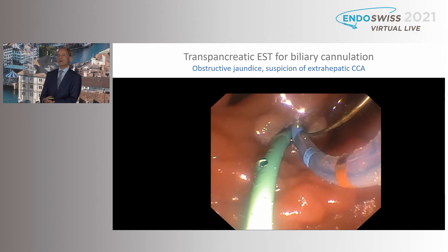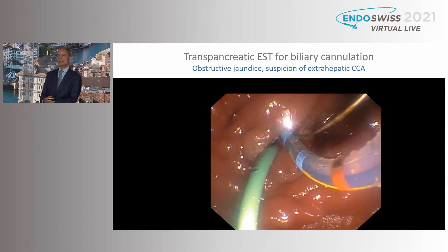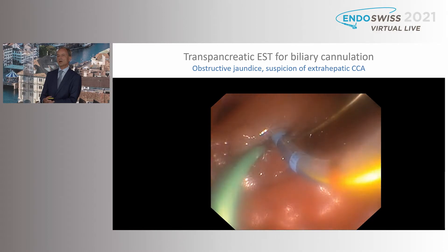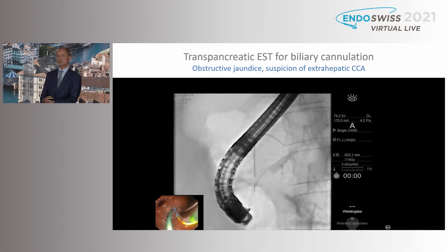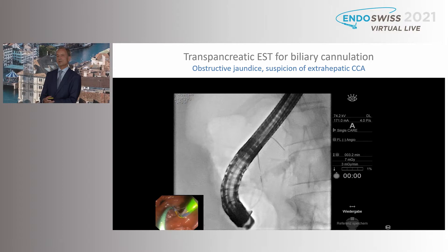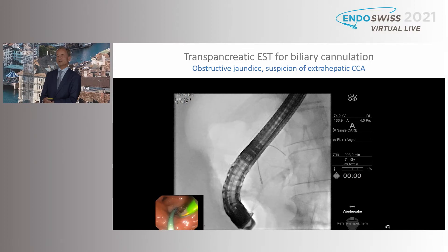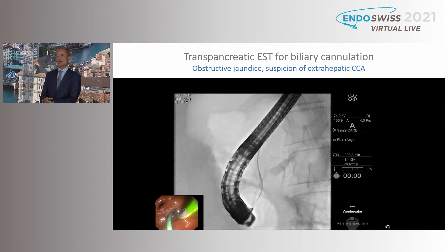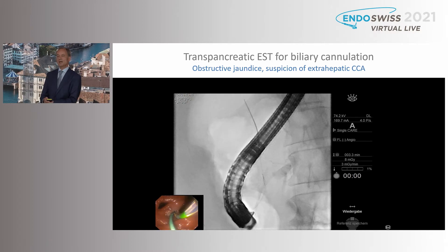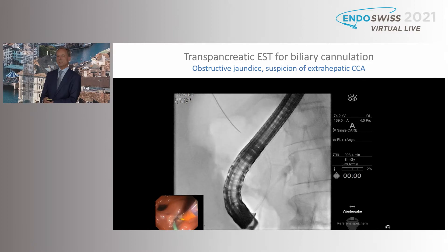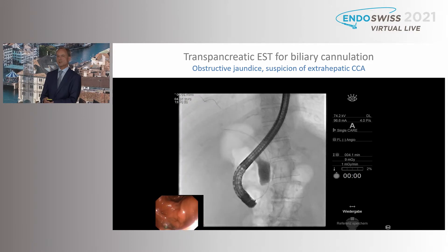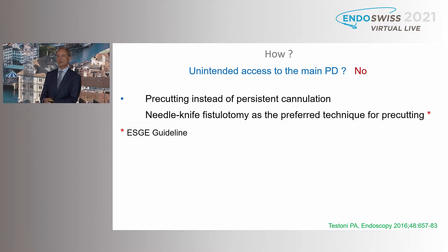And if I would fail cannulation now, I would proceed to needle knife cutting on top of the pancreatic stent — not freehand cannulation, but cutting on top of the pancreatic duct. We are already in the very dilated bile duct, and then of course we can proceed to biliary interventions, with the pancreatic stent in place for minimizing the risk of pancreatitis.